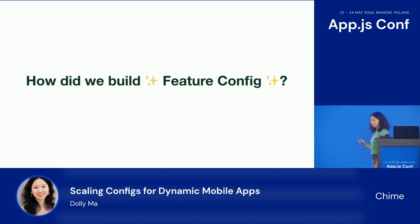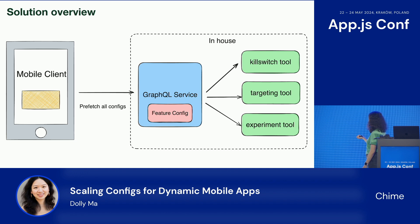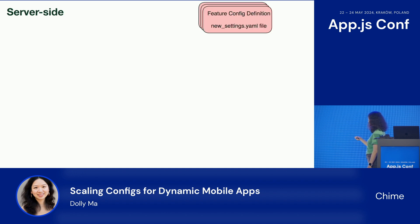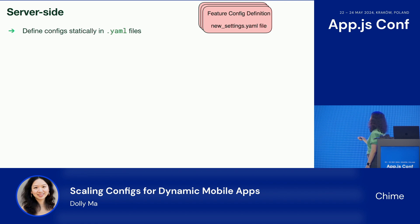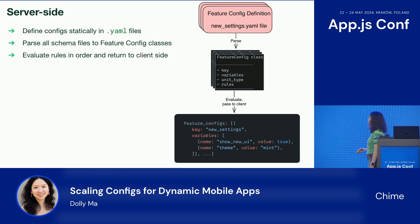Let's take a look at how we built it. Here is the overview of our solution. We added the feature config in-house inside our GraphQL service. It talks to the three different backend feature gating tools we have. When the app launches, the mobile clients will prefetch all the configs. On the server side, we defined the feature config definitions in YAML files. We then parse all the schema files to feature config classes. The class has a key, variables, unit type, and rules. We evaluate the rules in order and return the results to the client side.